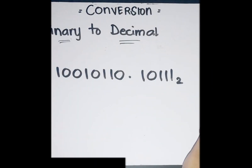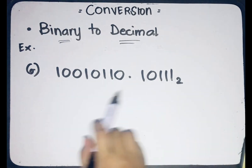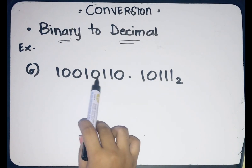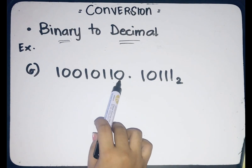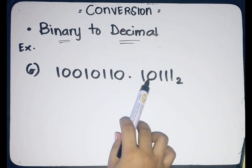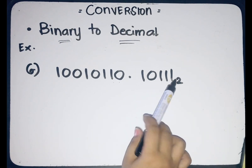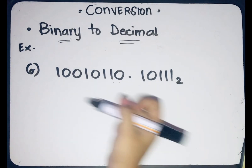Last example: we have binary 10010110.01111. Let's rewrite the binary number.